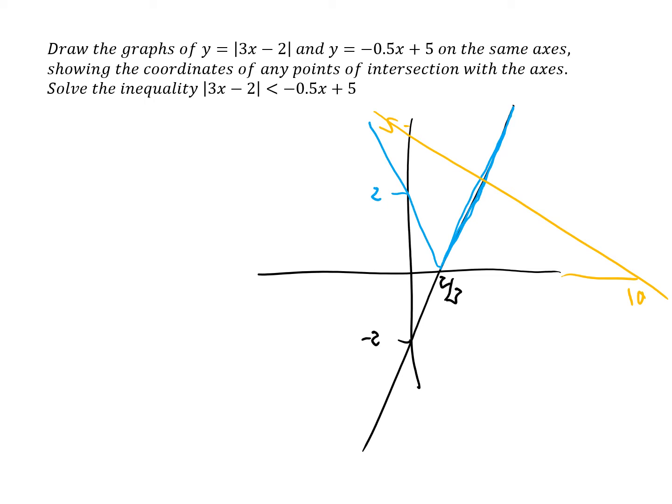So we're going to get 2 points of intersection of the two graphs here and another one here, and the points of intersection with the axes are 10, 5, 2 and two-thirds.